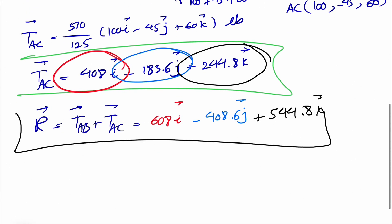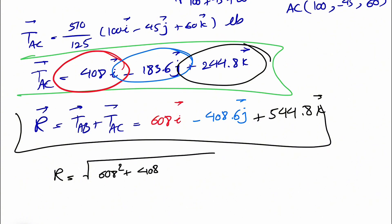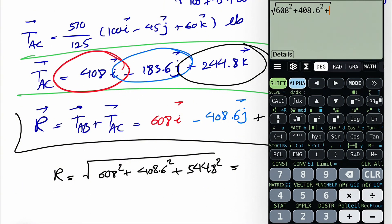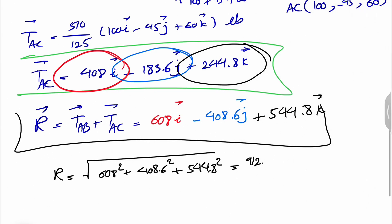That's the resultant for this question. To find the magnitude of the resultant, we take the square root of 608² + 408.6² + 544.8², which equals 912.92 pounds.